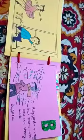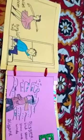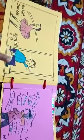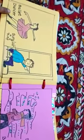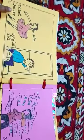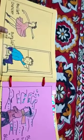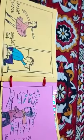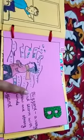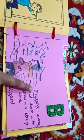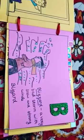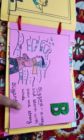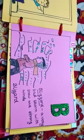Our next alphabet is B. The first word from B is ballet dancer. The second is burglar, that is a thief. And the third is blizzard. Blizzard means a very bad storm with snow and strong winds.